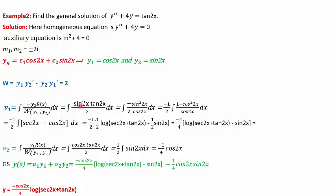v1 comes out to be, on substituting y2 = sin(2x), r(x) = tan(2x), and W = 2, the integral of −sin²(2x)/(2·cos(2x)). We write sin²(2x) as 1 − cos²(2x) to simplify. After dividing, the integral becomes −(1/2)∫(sec(2x) − cos(2x)) dx. This gives −(1/4)·log|sec(2x) + tan(2x)|, and the second part, the integral of cos(2x), gives sin(2x)/2.